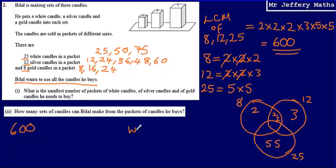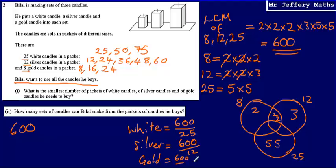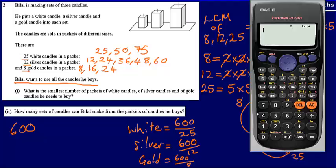So what we're going to have to do is just take our 600 and divide by 25, 12, and 8. So for white candles, that's going to be 600 divided by 25. For silver candles, that is going to be 600 divided by 12. And then gold candles is going to be 600 divided by 8. And remembering that this is a calculator paper, so we can do all of these on our calculator.